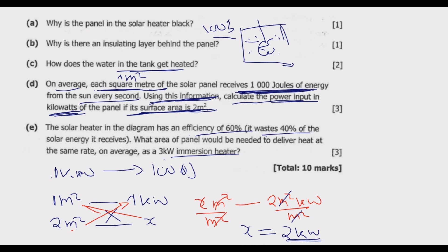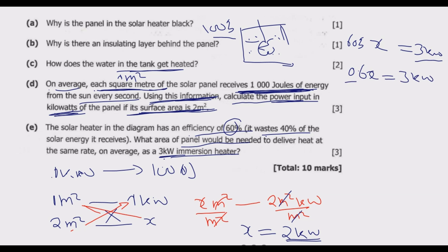Since 40% is wasted, we need to find the input power x such that 60% of x equals 3 kilowatts. So: 0.6 × x = 3 kW. Dividing both sides by 0.6, x = 5 kilowatts.